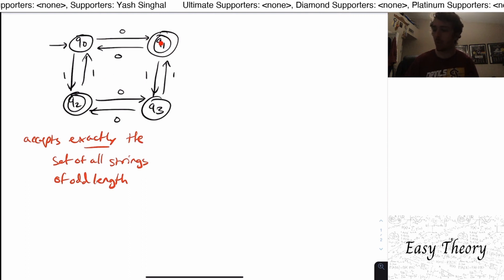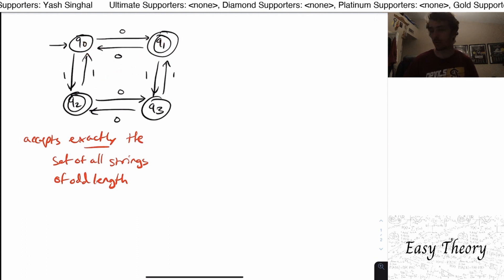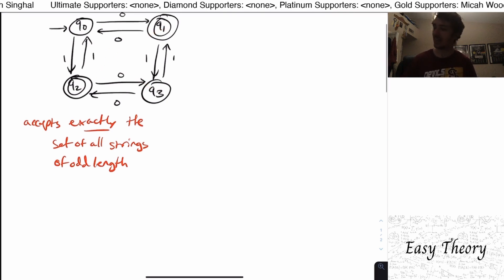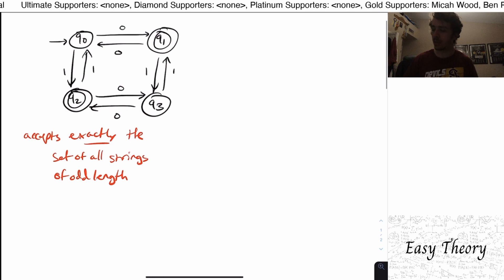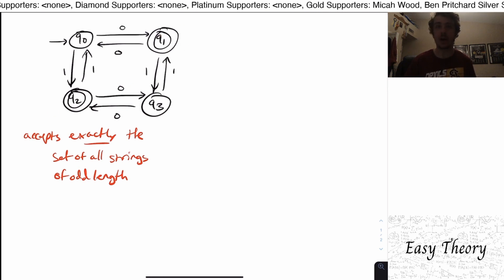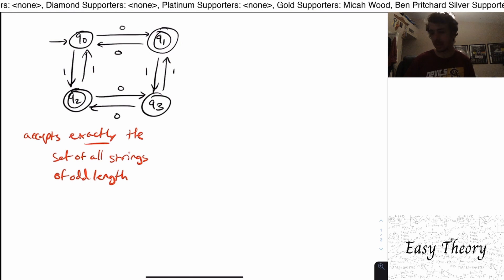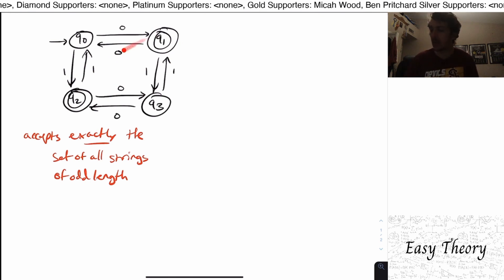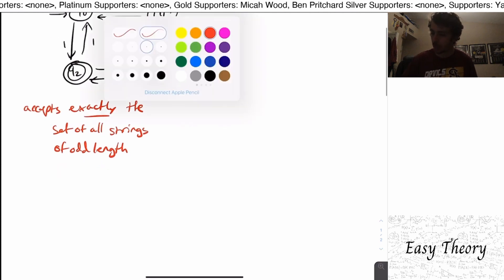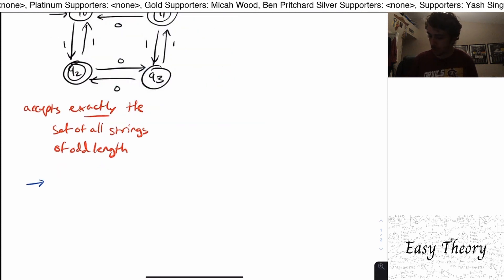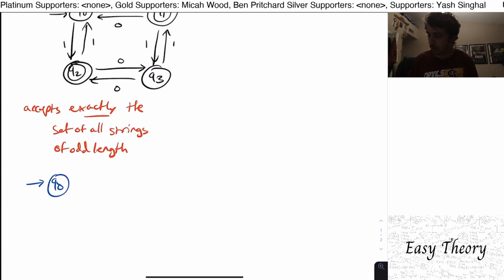If we read one more from either one of these two, then we'll be in one of these two. And if we read one from one of these two, we'll be in one of these two, etc. So therefore, we can conclude that if we're in q1 or q2, we have seen an odd number of characters. And I don't care which one necessarily. But if we're here, we have seen an odd number of characters.